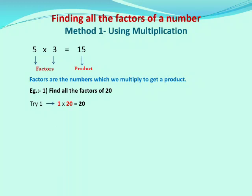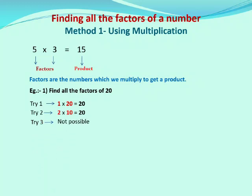What is after 1? 2. Now we will try with 2. You know that 2 tables will go into 20. 2 times which number is 20? 2 times 10 is 20. Now after 2, we will try with 3. Check the tables of 3 — does 3 times any number equal 20? No. So we write not possible. Next, try with 4. 4 times which number is 20? 4 times 5 is 20. So 4 and 5 are factors of 20.